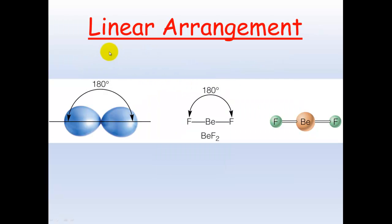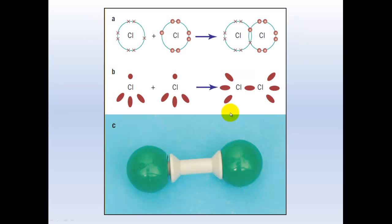Linear arrangement means a straight line. As you can see, these atoms are 180 degrees away from one another. Chlorine will form this, and even though it's got these lone pairs of electrons on the outside, these are not involved in determining the final shape.